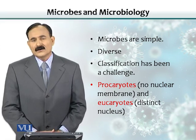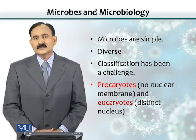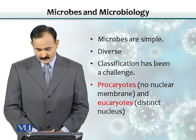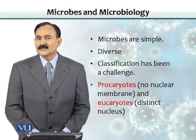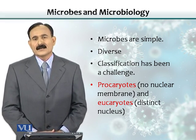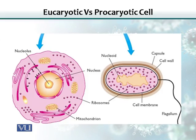Generally, all microbes could be grouped either into prokaryotes or into eukaryotes. Prokaryotes don't have a defined nucleus, whereas eukaryotes have a distinct nucleus. As could be seen in this picture, the large cell belongs to a eukaryote, whereas the smaller one is a prokaryotic cell. The nucleus is very well defined in the eukaryotic cell, but there is no such division in the prokaryotic cell.